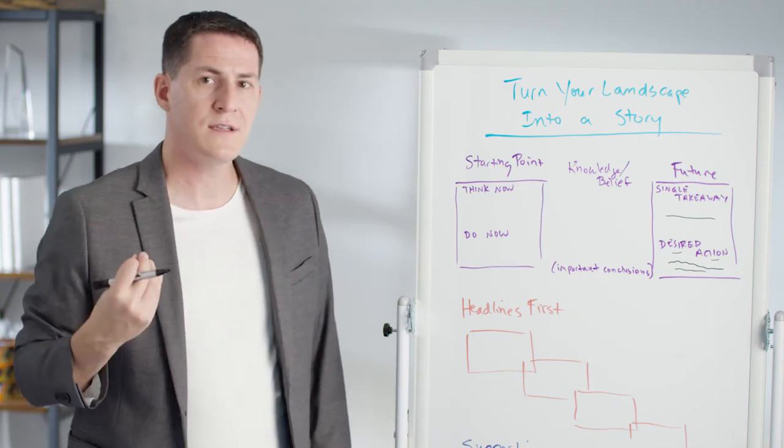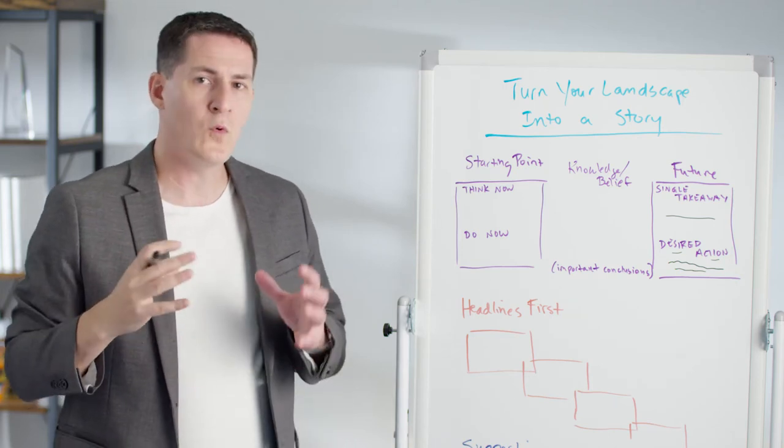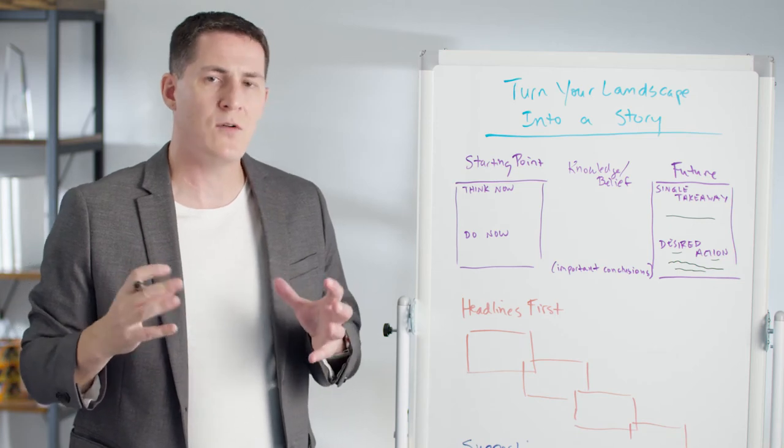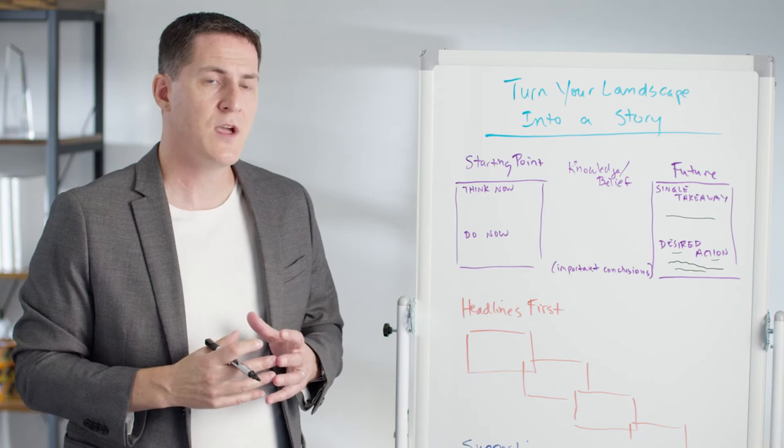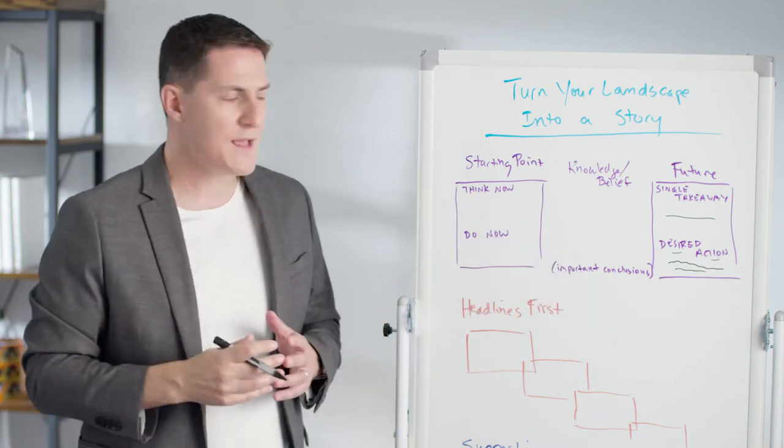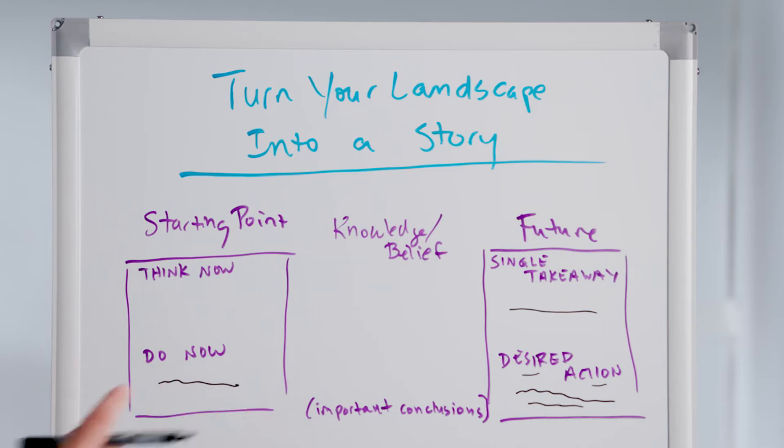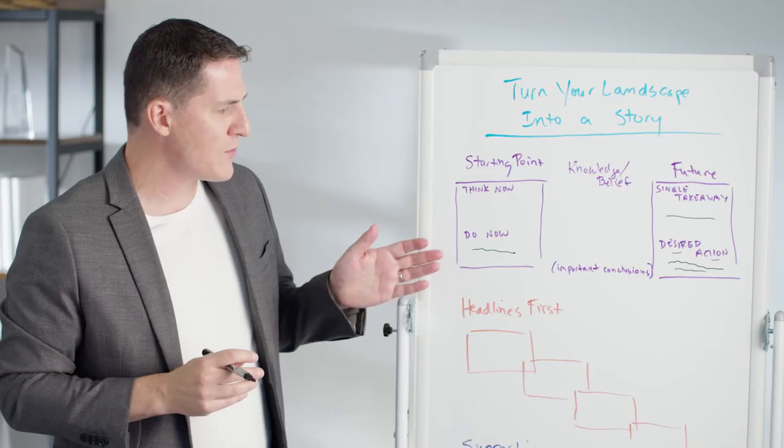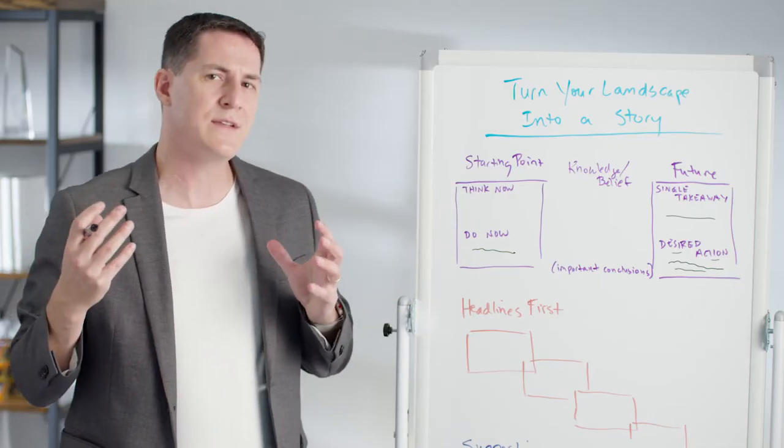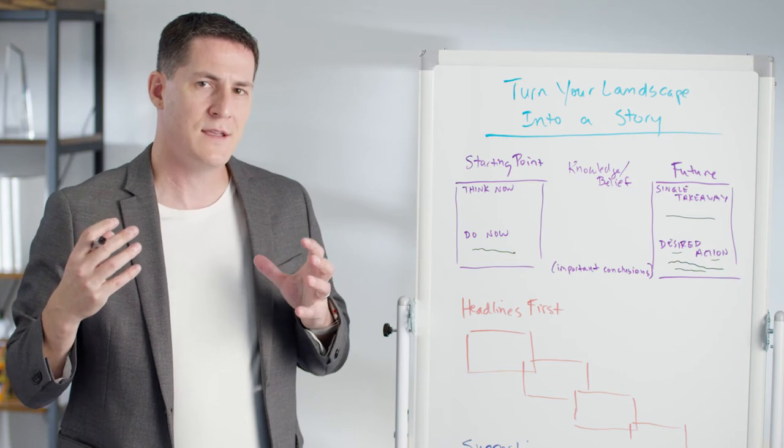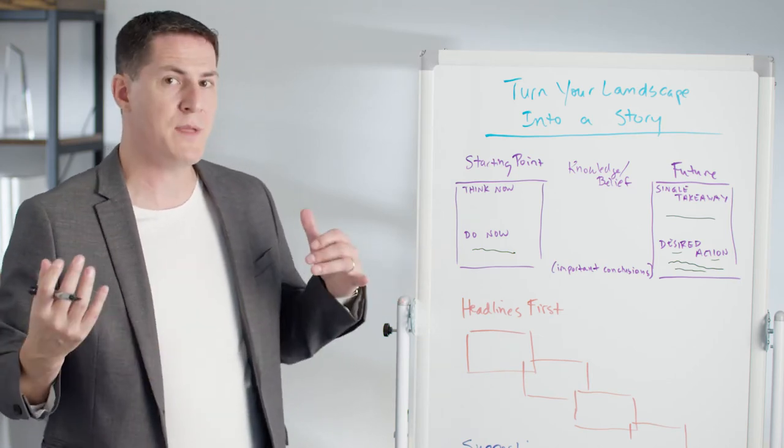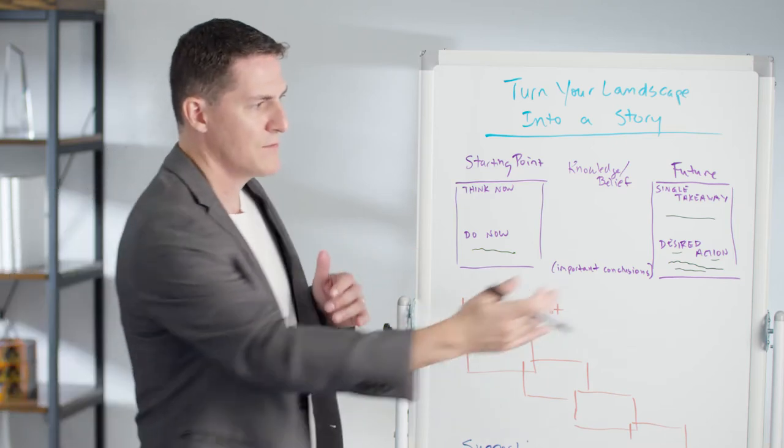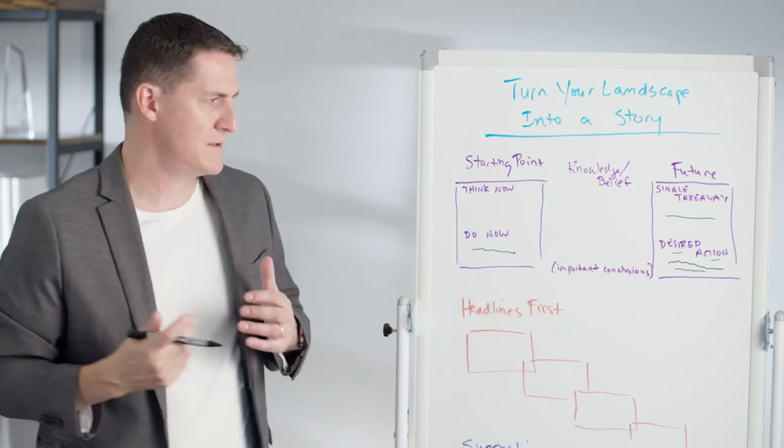So now you've written your desired action, and you've written your single takeaway for your landscape analysis. Now we have to look at the current state. What is the state of the target audience now or the stakeholders that are going to be in the room or the people that you want to take this action? What is it that they're doing now instead of your desired action? You'll place that here, and then corresponding or going with that, what do they think or believe now or what's their current mindset?